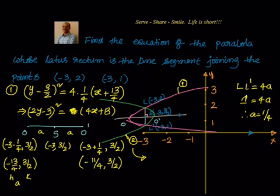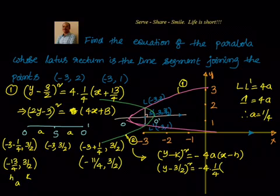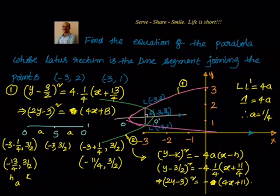For parabola 2 opening to the left, the vertex is O' = (-11/4, 3/2). The equation is (y - K)² = -4A(x - H), so (y - 3/2)² = -4 × (1/4) × (x + 11/4). Simplifying, the 1/4 and 4 cancel, giving (2y - 3)² = -(4x + 11). So these are the two equations of the parabola.